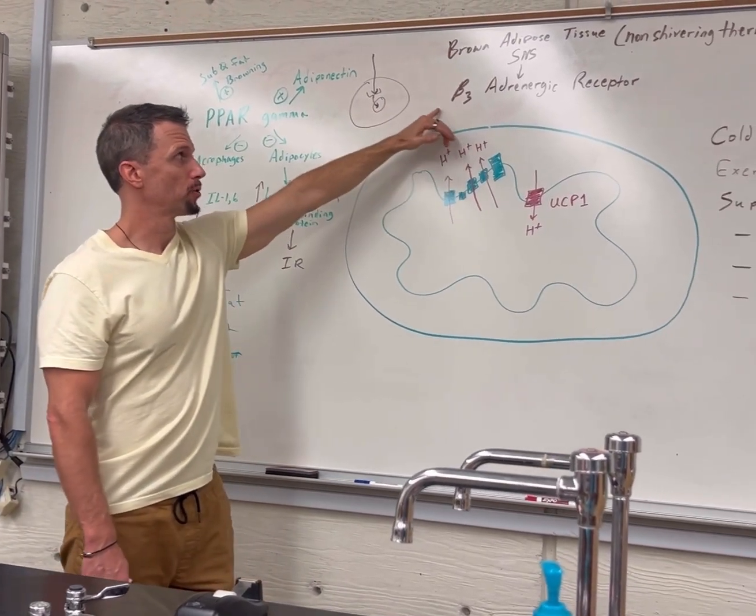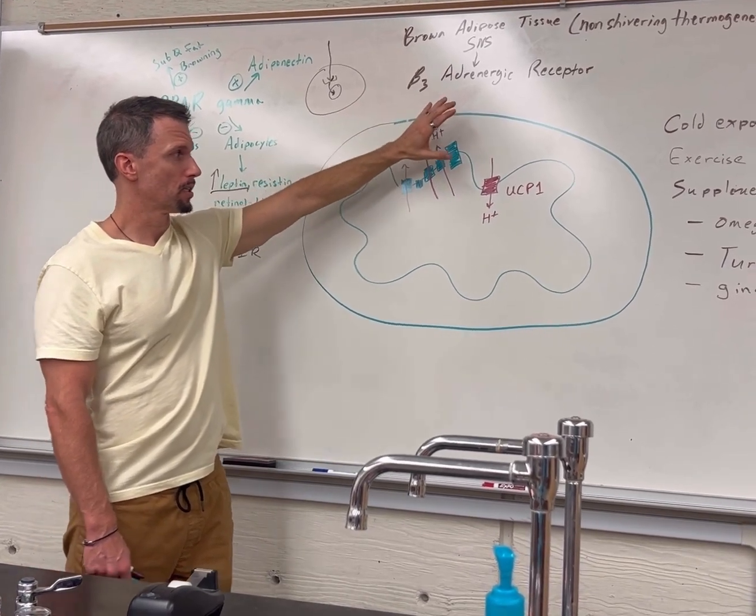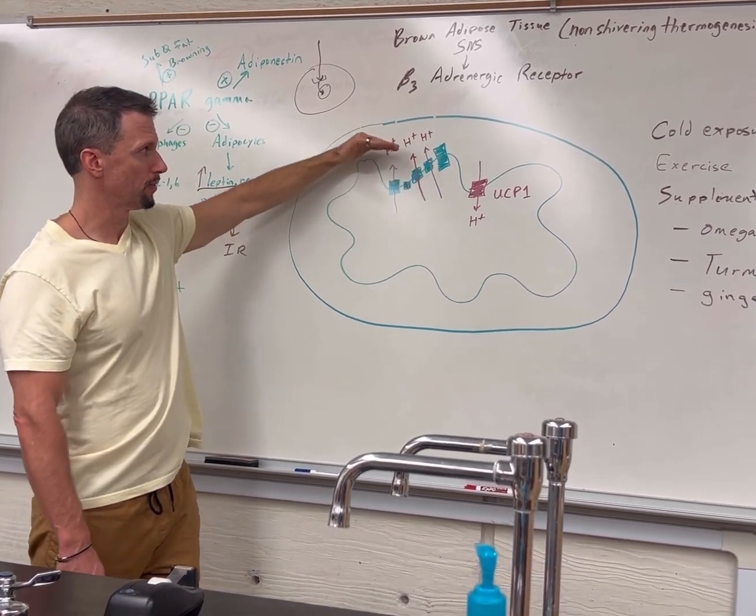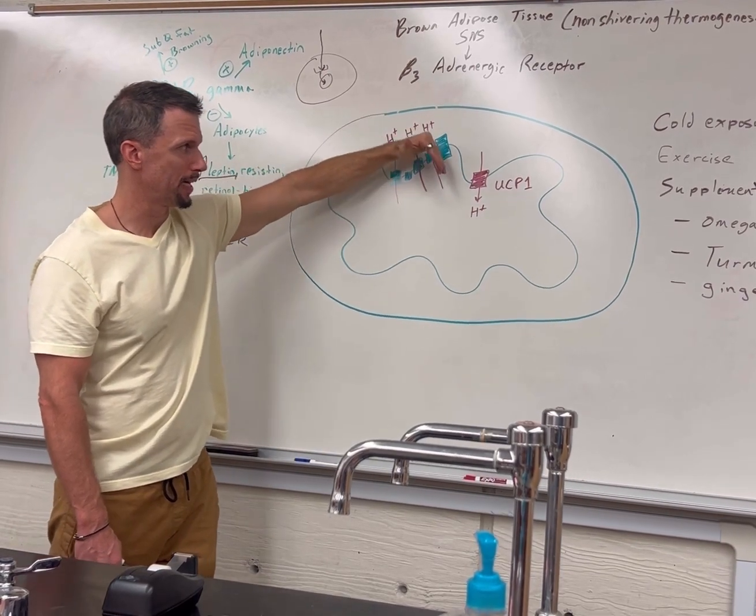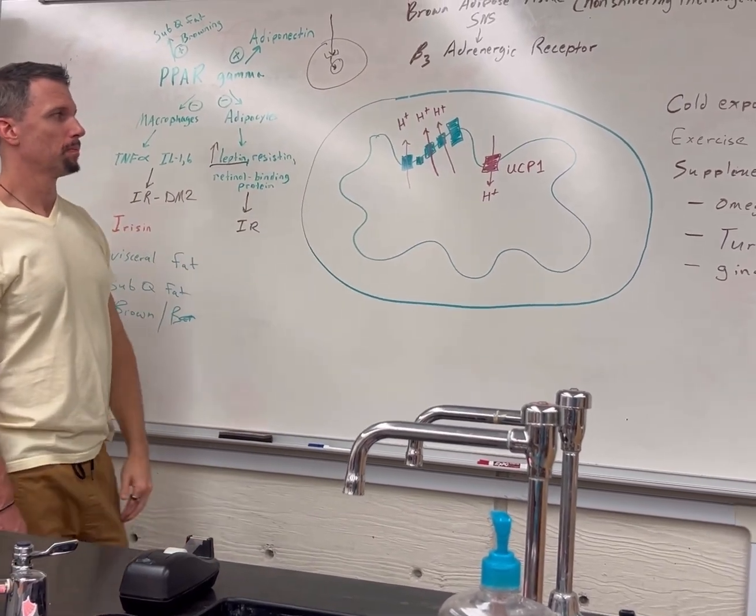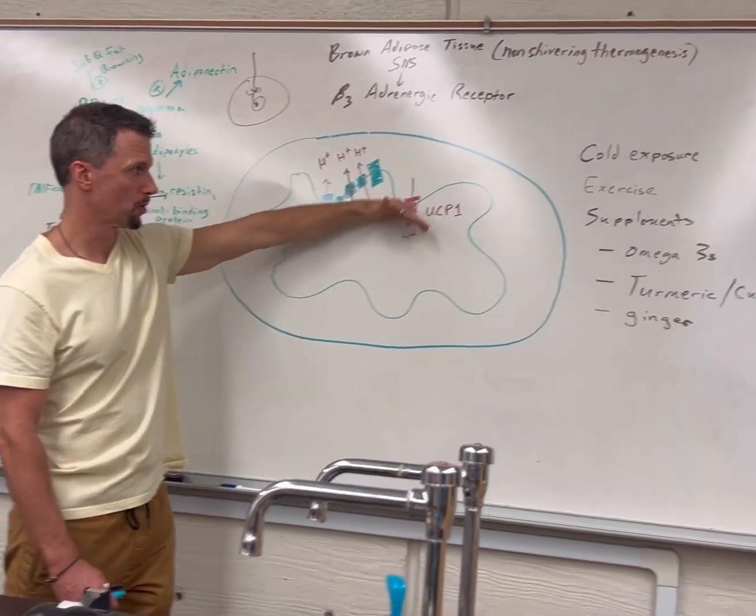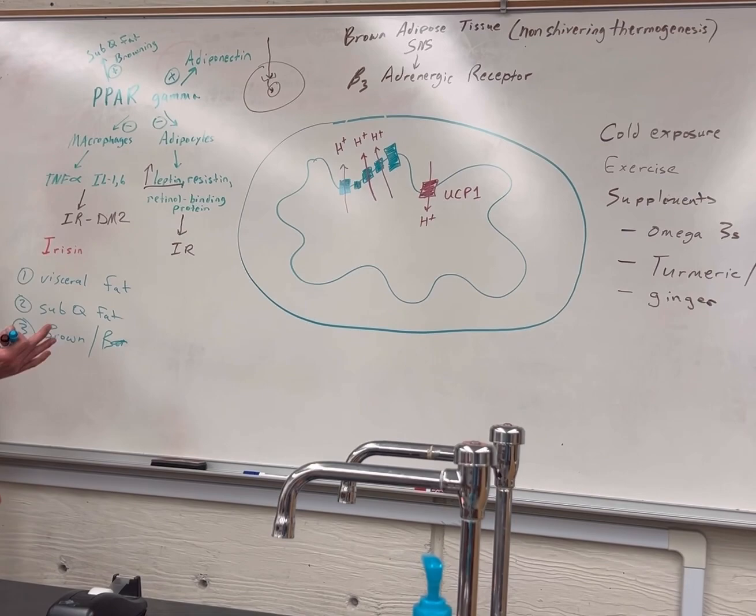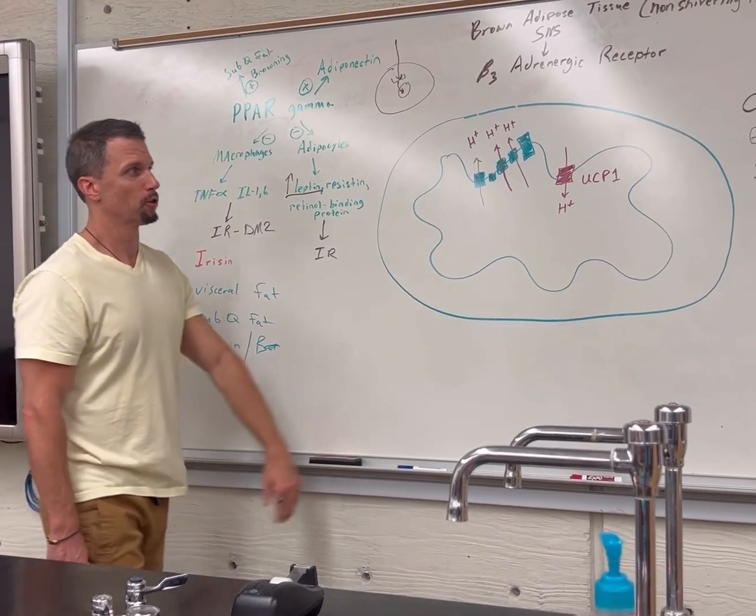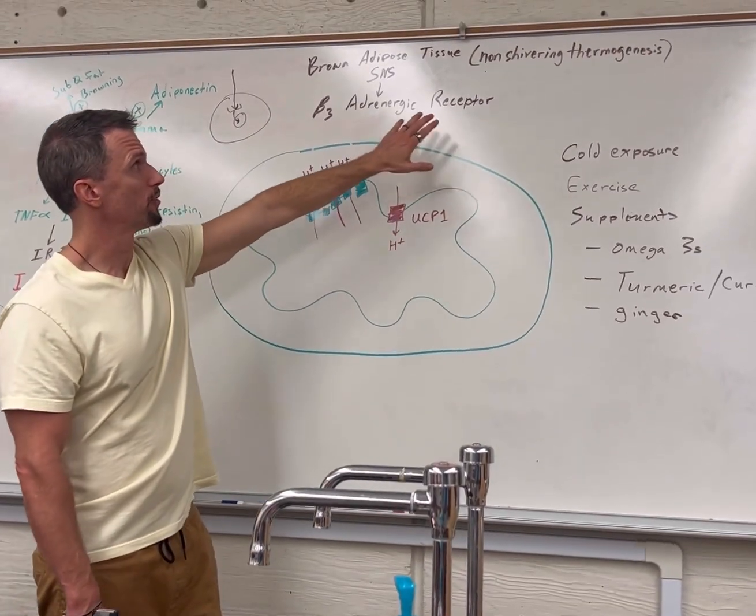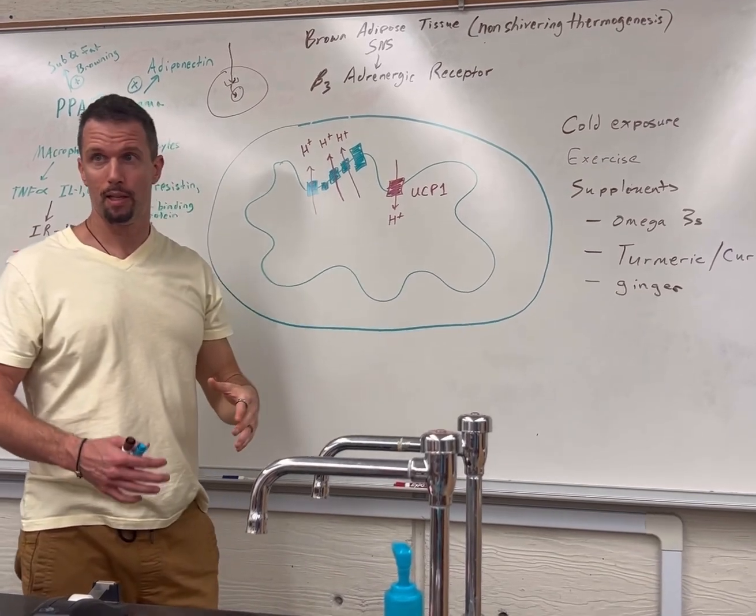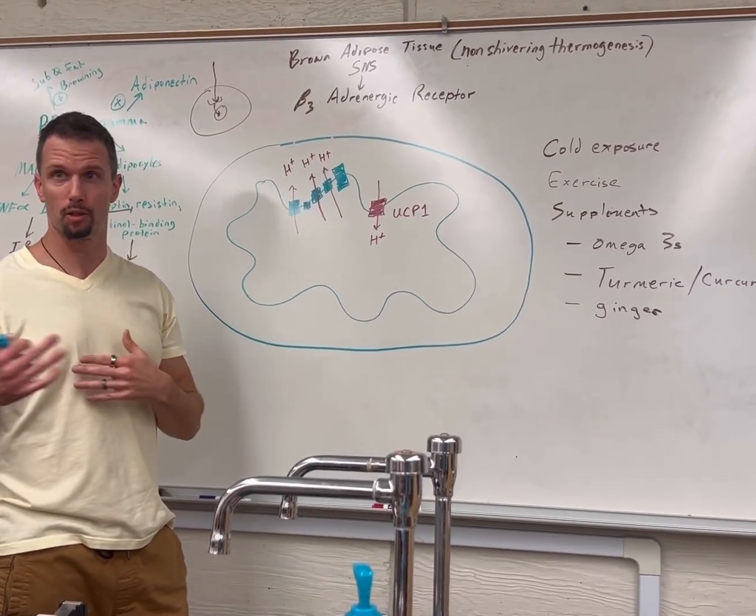When brown fat is activated by the sympathetic nervous system, it binds to G-protein coupled receptors. It causes heat to dissipate. All these hydrogen ions that want to get back to the matrix, instead of going through oxidative phosphorylation making ATP, just leak back into the matrix where they have to be pushed back out. That potential energy of going down its electrochemical gradient is coupled with metabolic heat, increasing your metabolism and helping pull glucose from the blood.